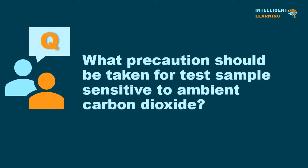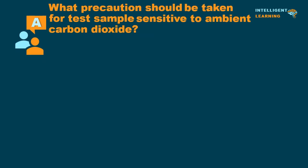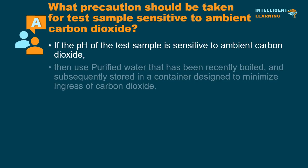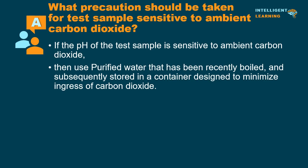What precautions should be taken for test samples sensitive to ambient carbon dioxide? If the pH of the test sample is sensitive to ambient carbon dioxide, then use purified water that has been recently boiled and subsequently stored in a container designed to minimize ingress of carbon dioxide.